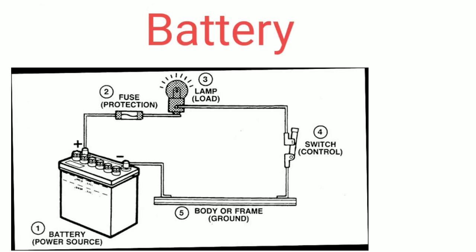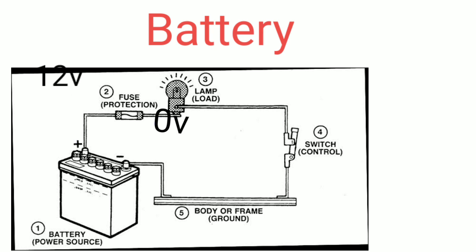Let's look at a battery example. A battery has positive and negative terminals. This battery has 12 volts — positive terminal at 12 volts and negative at 0 volts. The potential difference is produced by the battery's EMF. This EMF gives a 12-volt potential difference.